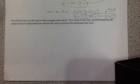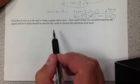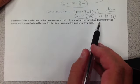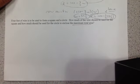All right, for our last example of optimization, we have four feet of wire that's to be used to form a square and a circle. The question is how much of the wire should be used for the square and how much for the circle in order to get a maximum total area.